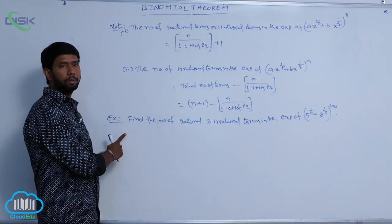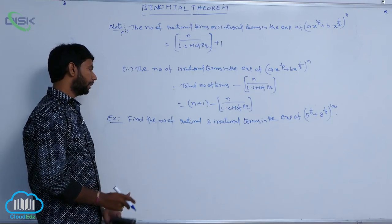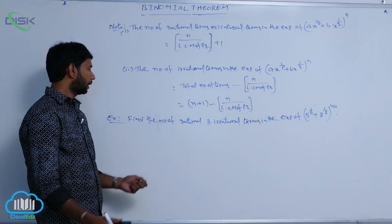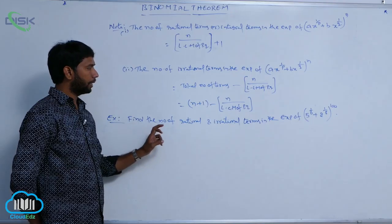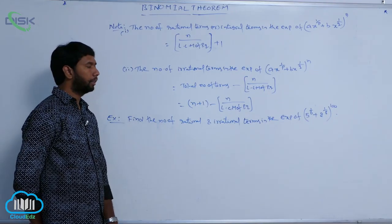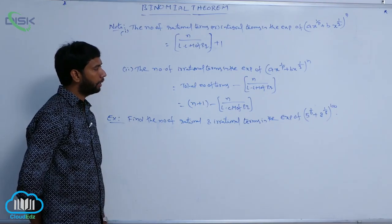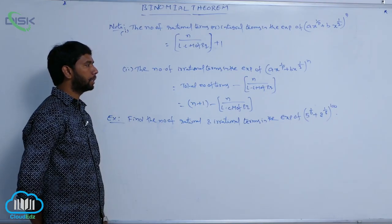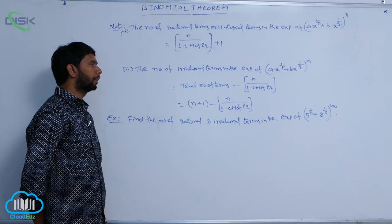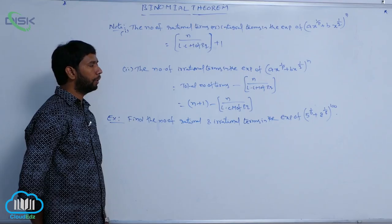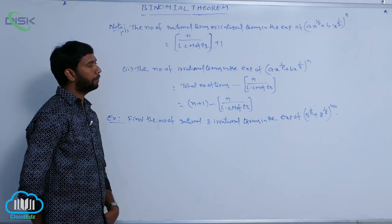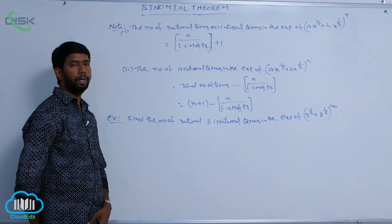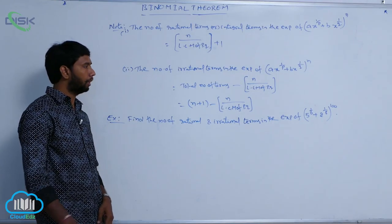Example problem: rational terms and irrational terms. Find the number of rational and irrational terms in the expansion of (5^(1/6) + 2^(1/8))^100.